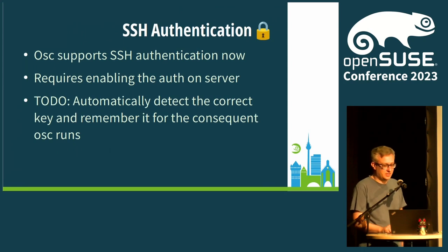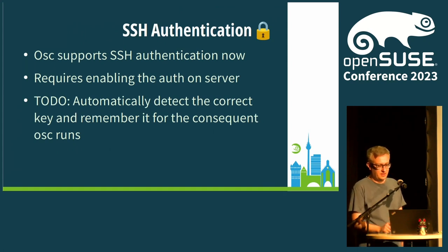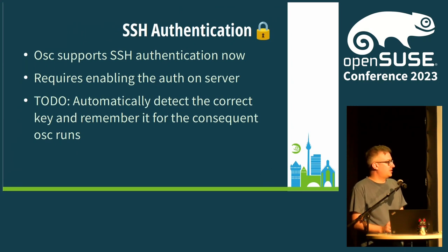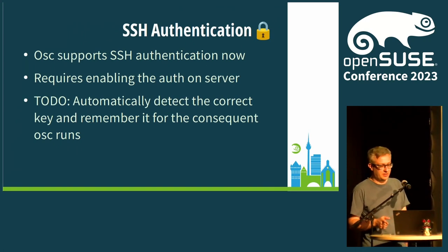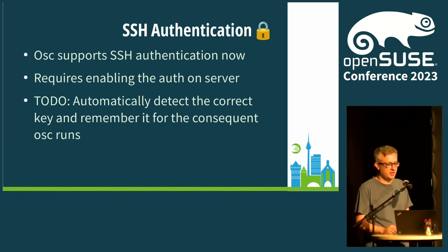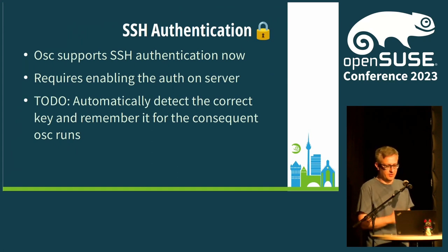Another nice feature is SSH authentication — it is supported now. You need to enable it on the server, obviously. Unfortunately there are still some hiccups. Currently there is some auto detection which works with just a single key, which is not ideal. Or you can provide an explicit path to a file, which is also not great, especially when you use SSH agent or have your keys in GPG. It also doesn't work with SSH agent forwarding. What I was thinking about is to detect the right key by trying to authenticate several times, and if one key works, remember it in OSC for the next runs.